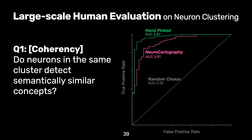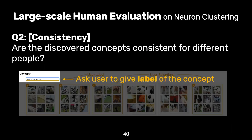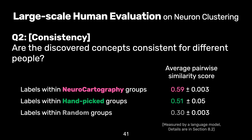Both hand-picked and NeuroCartography-generated clusters performed well overall, implying that the clusters generated are interpretable and have coherent meaning. To answer the second question about concept consistency, we asked people to provide a short label if they found a cluster from the given neurons. We statistically compared how different users label the same clusters using a language model to calculate the average pairwise similarity between all labels in the same cluster. NeuroCartography and hand-picked generated groups showed higher similarity scores than randomly generated groups, demonstrating semantic consistency in how users understand the detected clusters.